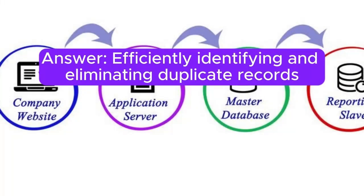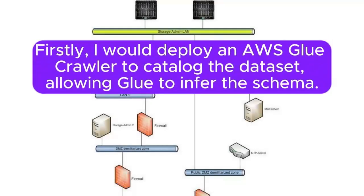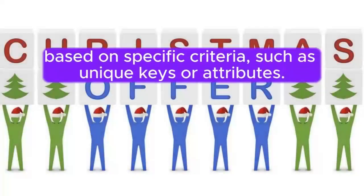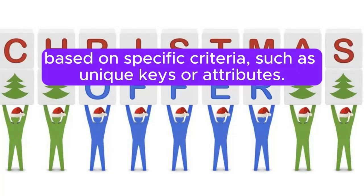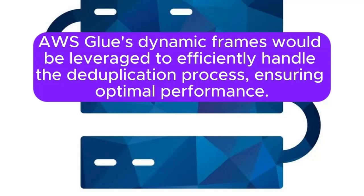Efficiently identifying and eliminating duplicate records from a large dataset in Amazon S3 using AWS Glue involves a systematic approach. Firstly, I would deploy an AWS Glue crawler to catalog the dataset, allowing Glue to infer the schema. Subsequently, within the Glue transformation script, logic would be implemented to identify duplicate records based on specific criteria, such as unique keys or attributes. AWS Glue's dynamic frames would be leveraged to efficiently handle the deduplication process, ensuring optimal performance.